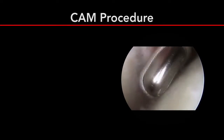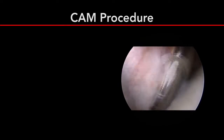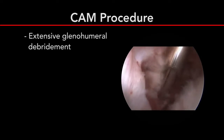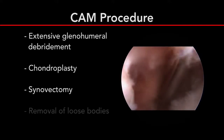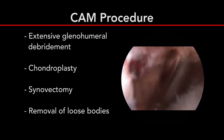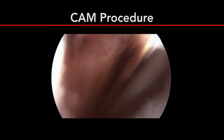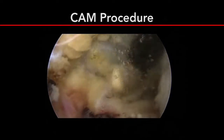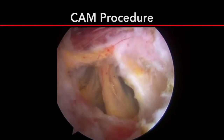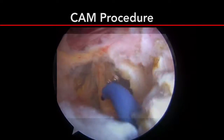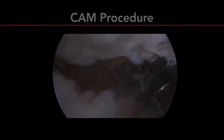The common approach to arthroscopic management of glenohumeral osteoarthritis includes glenohumeral debridement, chondroplasty, synovectomy, and removal of loose bodies. In addition, the comprehensive arthroscopic management, or CAM procedure, involves capsular releases, axillary nerve neurolysis, and if present, resection of the inferior humeral head osteophyte.